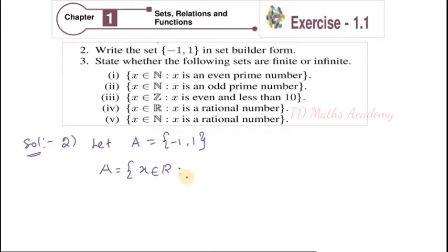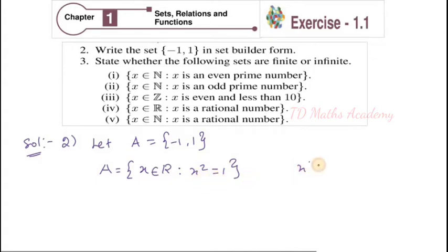Now I have to give another condition — an easy condition. Just think: x squared equals 1. That is the condition. x² = 1 is the condition satisfied by the answer. x² = 1 means x equals plus or minus 1. So plus 1 and minus 1 are automatically covered. We also write x element of real numbers.